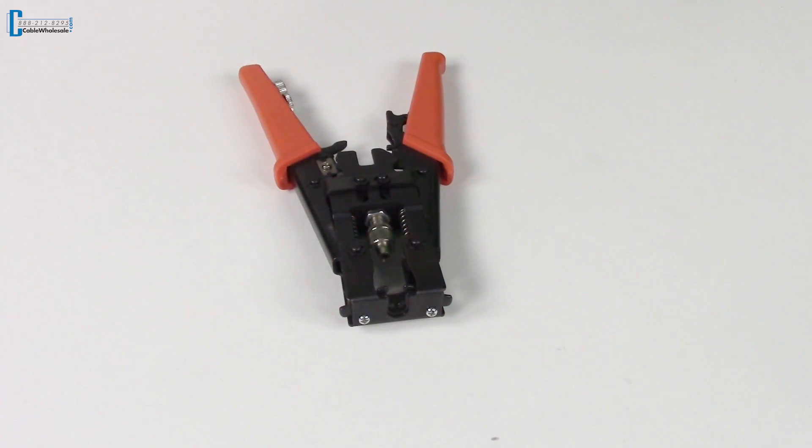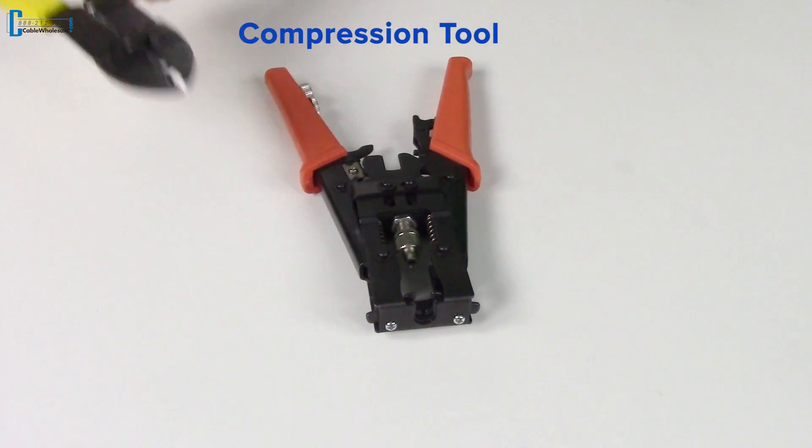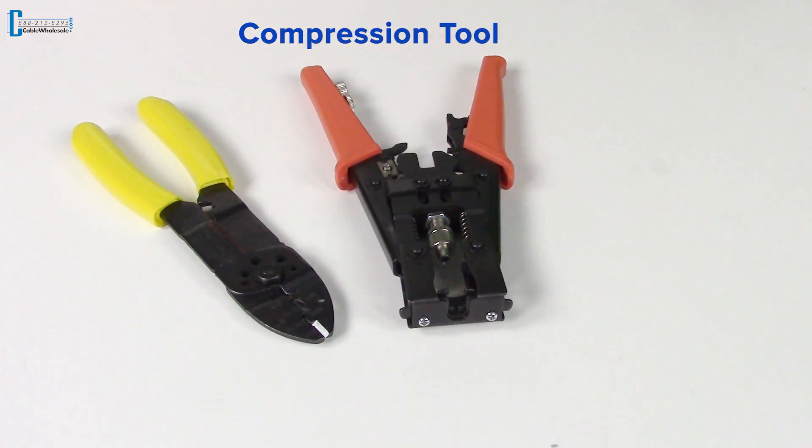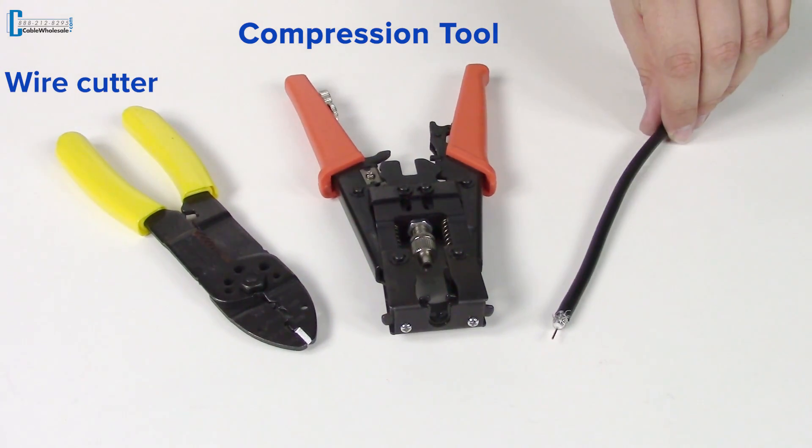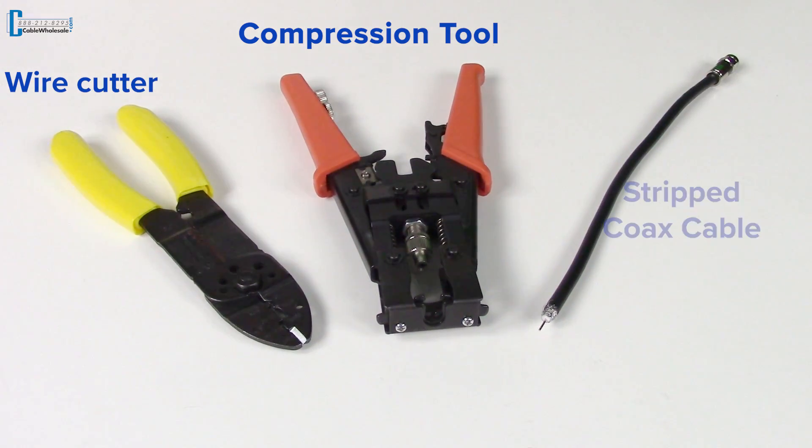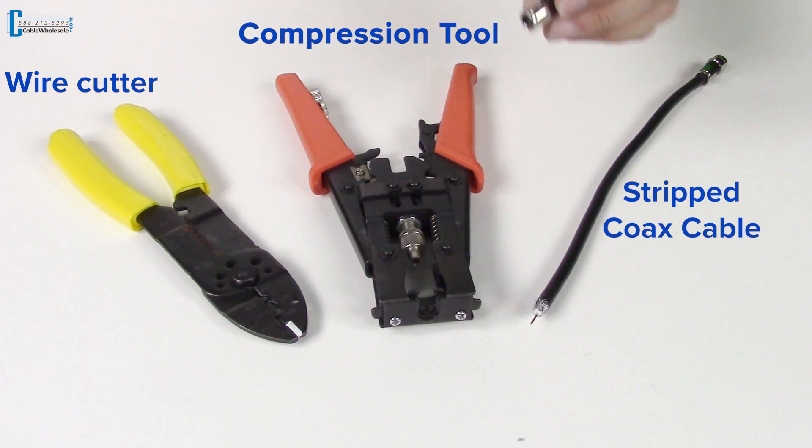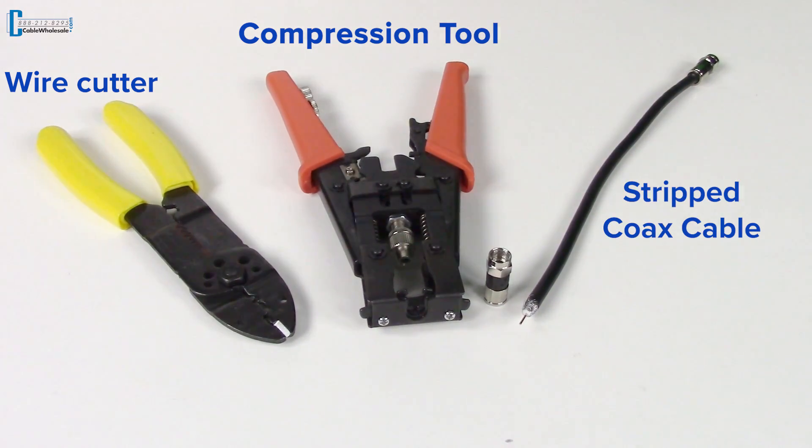For this DIY, you'll need a coaxial compression tool, a wire cutter, a properly stripped length of coaxial cable to suit your application, and an F-pin compression connector.